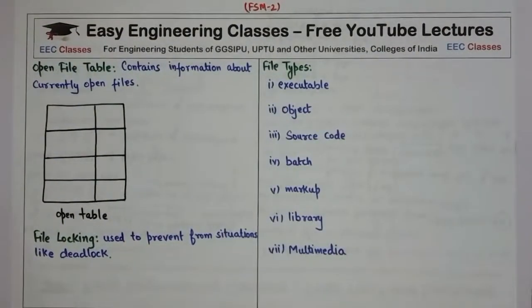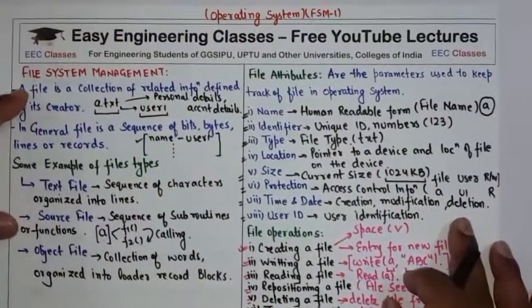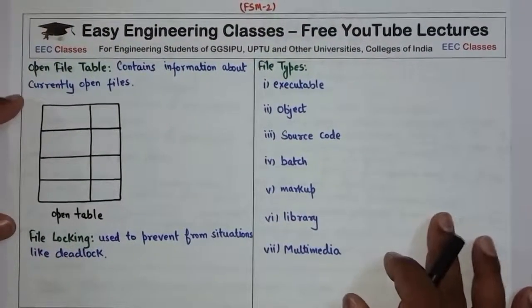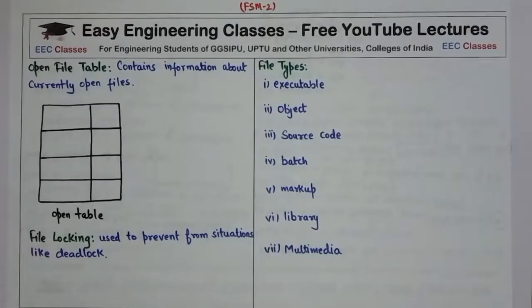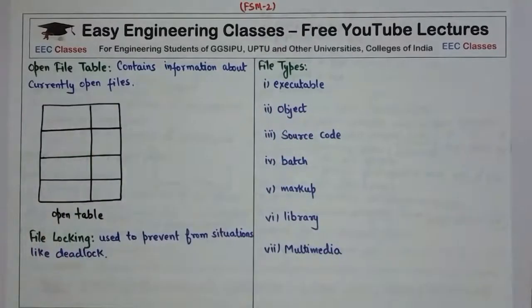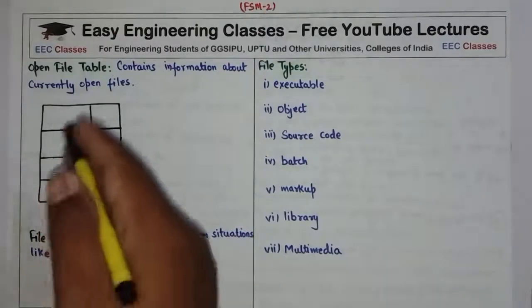This is the second lecture on file system management. In the previous lecture, I covered file operations such as writing or reading a file. To write or read a file, we first have to open the file. Many operating systems maintain a data structure called the open file table, which contains information about the currently open files.